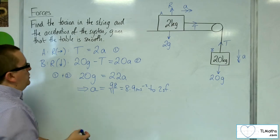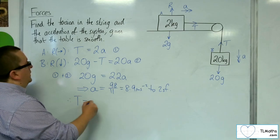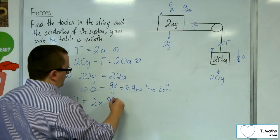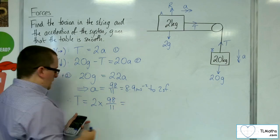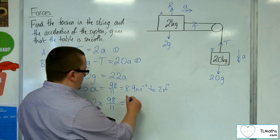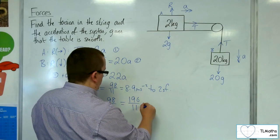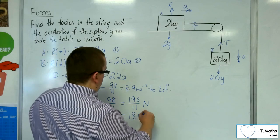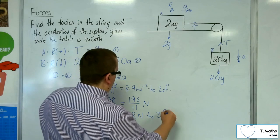So if that's the acceleration, then the tension, using equation number 1, is two lots of a. So double that. So 196 over 11 newtons, which is equal to 18 newtons to two significant figures.